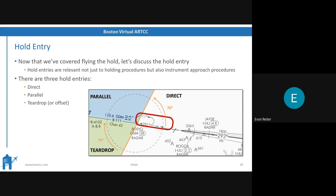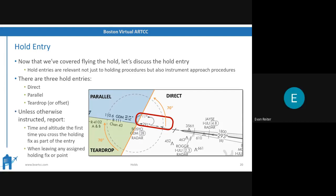The key with these entries is where you're coming from. When we look at the direct entry, if you're on the side of the hold where the direct entry is — in this case the right side — that's where you'd be making that entry from. If you happen to be up where the parallel sector is, you'd do a parallel. And a teardrop from the opposite sector. We're going to talk about all that in the next couple of slides.